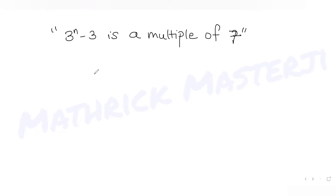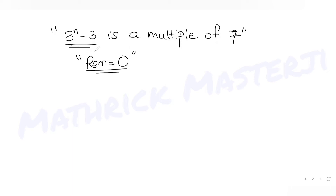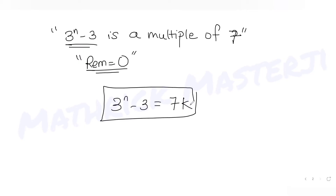For any integer, whenever this entire expression is a multiple of 7, if I divide it by 7 I should get remainder zero. So 3^n minus 3 is divisible by 7, meaning 3^n minus 3 equals 7k for some integer value of k.